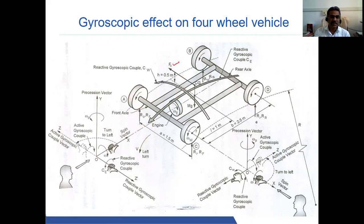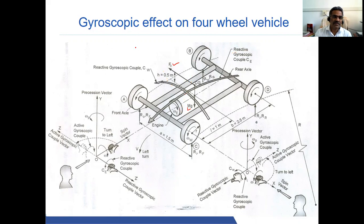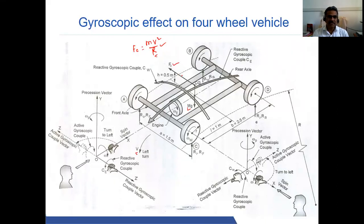When it is taking a left turn, the centrifugal force is acting towards the outward direction and the mass of the vehicle is acting downward. The equation for centrifugal force is FC = mv²/r, where m is the mass of the vehicle, v is velocity, and r is the radius of the curve. This centrifugal force acts towards the outside.